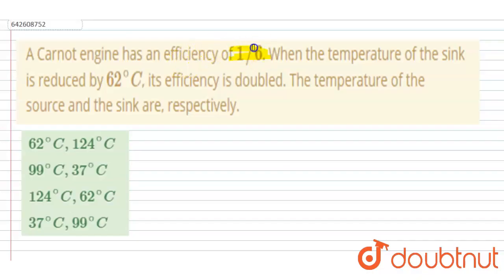Hello everyone. A Carnot engine has an efficiency of 1/6. When the temperature of the sink is reduced by 62°C, its efficiency is doubled. You have to find out the source and sink temperature. If I write the efficiency of Carnot engine, that is